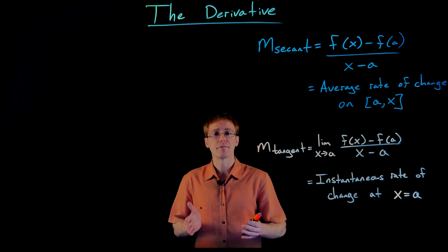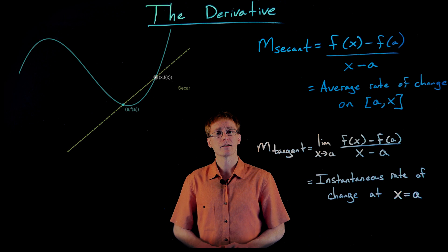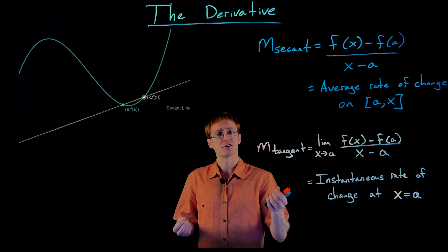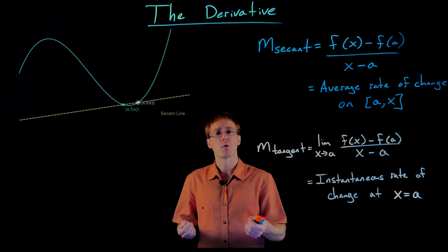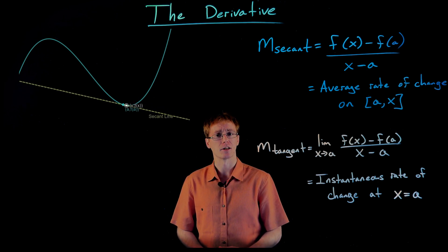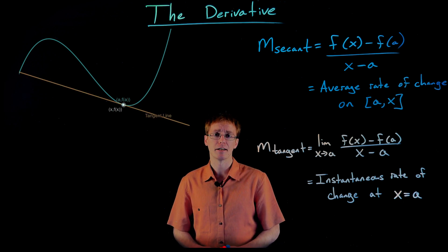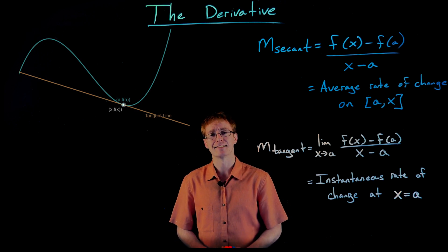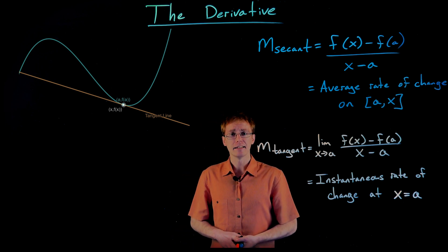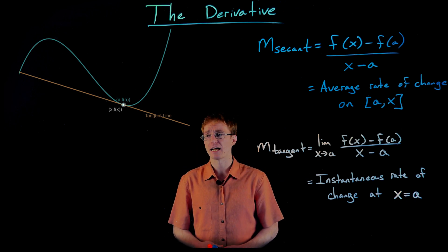We can see that process graphically. If we look at our graph in the upper left, we first look at the secant line, which is just connecting those two points on our curve. And then when we take the limit as x approaches a and let our second point approach that first point, we can see our secant line is slowly turning into our tangent line. Now that we've taken the limit, we get the tangent line, and that has the interpretation of the instantaneous rate of change of our function at the point of the tangent line. So all the derivative of a function is, is finding the slope of the tangent line at that point or the instantaneous rate of change at that point.